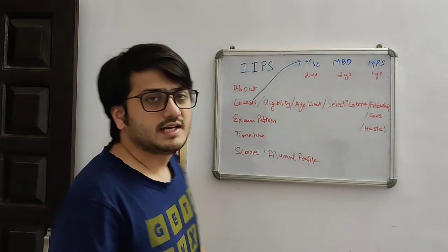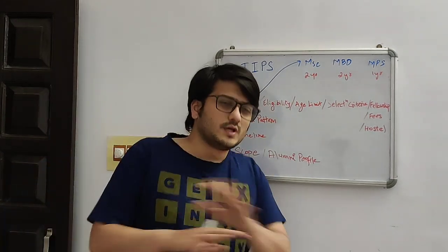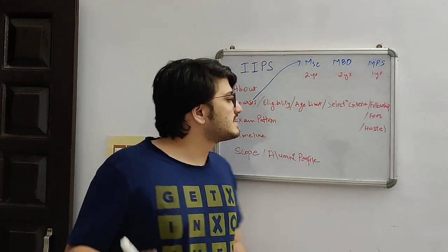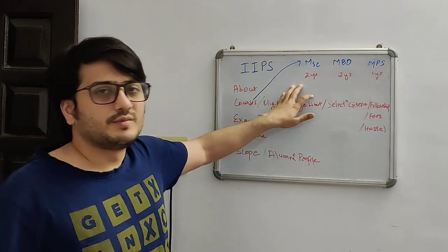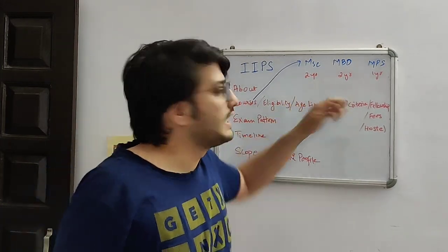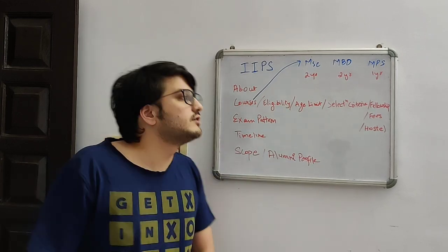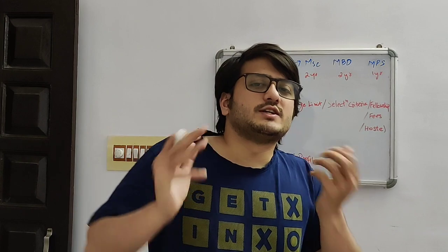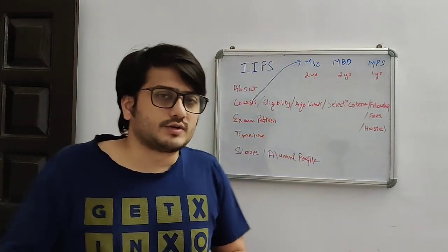Next, if we talk about eligibility: for MSc, you need to have a Bachelor's degree — any Bachelor's degree, be it Math, Physics, or anything. Whichever degree you pursued in your BSc is okay. For MBD, you need some sort of Statistics or Math background. You need a Bachelor's degree, and in that Bachelor's degree, you should have at least 2 papers with Math or Statistics components.